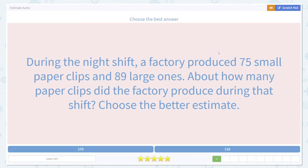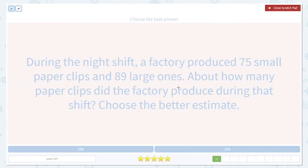During the night shift, a factory produced 75 small paperclips and 89 large ones. About how many paperclips did the factory produce during that shift? Again, this question is asking for the total of small and large paperclips, and it's asking us to estimate.